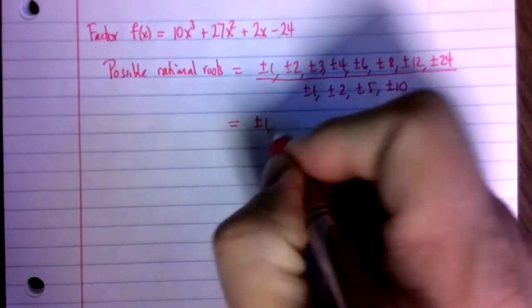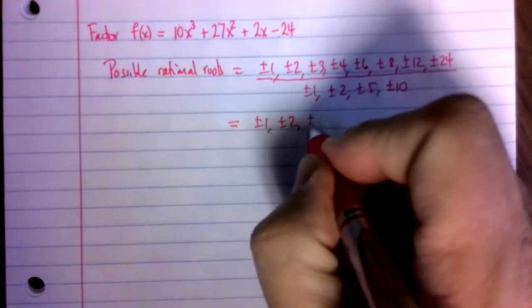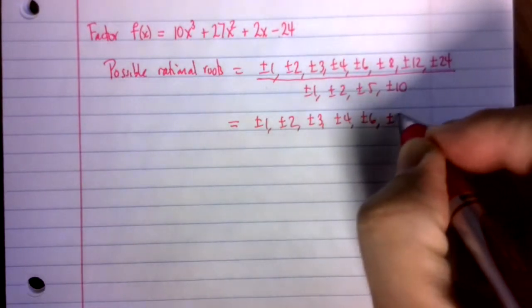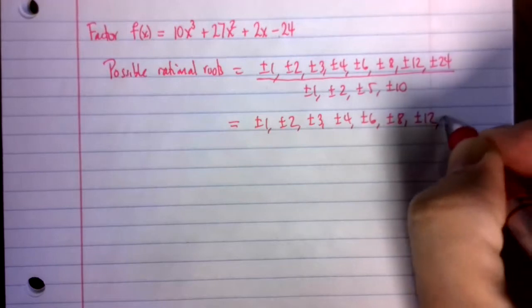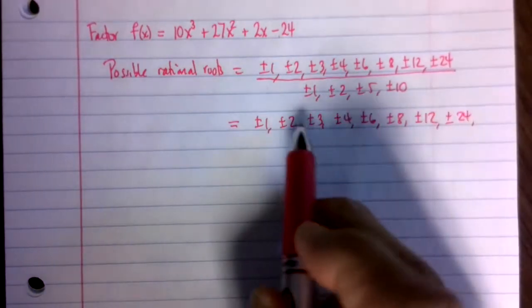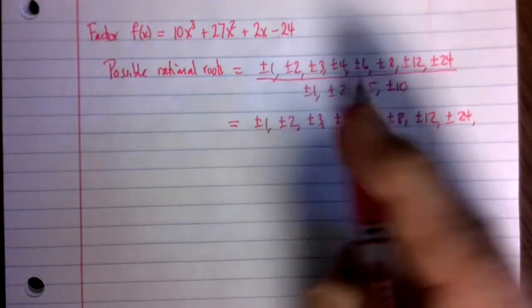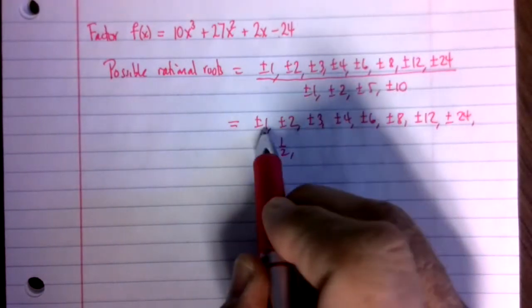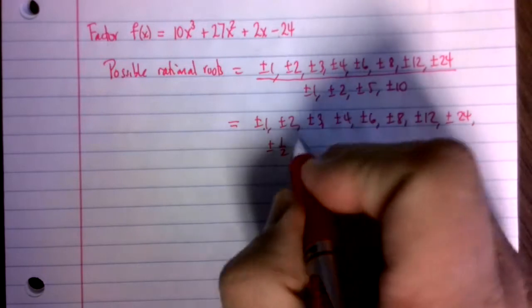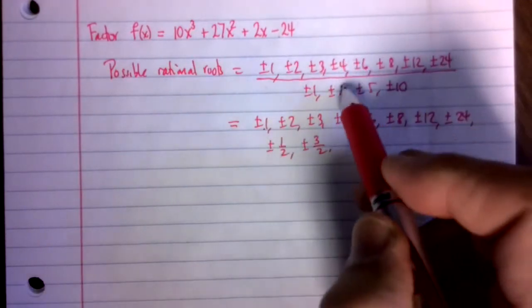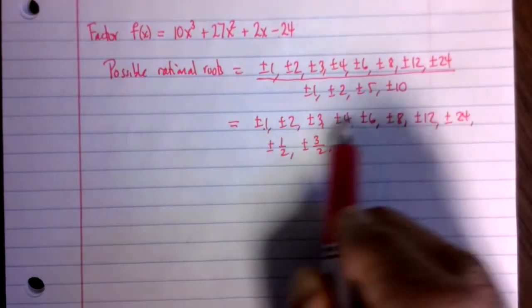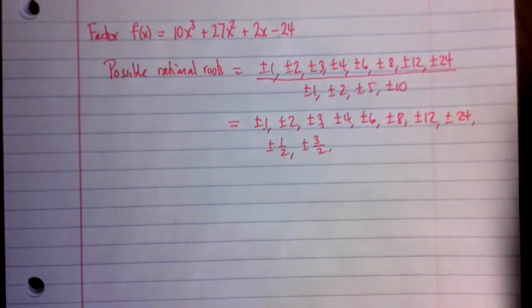So dividing by 1, plus or minus 1, plus or minus 2, plus or minus 3, plus or minus 4, plus or minus 6, plus or minus 8, plus or minus 12, plus or minus 24. Then I divide by 2. So plus or minus a half. 2 divided by 2 is 1, so no need to repeat that. 3 halves. Then 4 halves, 6 halves, 8 halves, 12 halves, and 24 halves are all somewhere on this list here, so no need to repeat those.